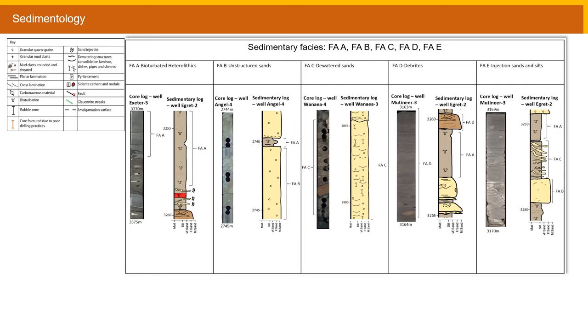The heterolithics are siltstones characterized by heavy bioturbations and interpreted as part of a low density turbidity current. The unstructured sands are larger homogenous sandy bed sets interpreted as high density turbidity currents. The dewatered sands are defined by dark concave upward laminae which are interpreted as dish and pipe structures formed from rapid deposition causing dewatering. The debrites consist of sand with small fine clasts of mud and finally the injection sands and silts are defined by regular intervals of heterolithic muds and sands. Both core images and digitized logs of each facies are shown here.